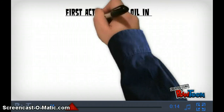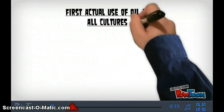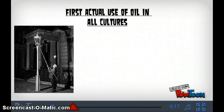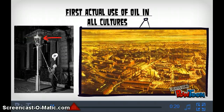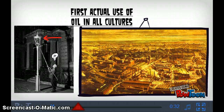Oil was first written about 4,000 years ago by ancient Persians discovering it in the bed of the Euphrates River, using it for medicinal purposes and lighting benefits. The earliest East Asian cultural use was the Chinese drilling it with bamboo sticks fitted with wooden drill bit tips in 34 AD, using the oil as a means to evaporate brine and make salt.